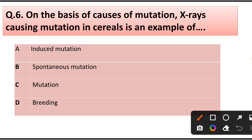Question number 6. On the basis of cause of mutation, X-ray causing mutation in cereals is an example of: induced mutation, spontaneous mutation, or mutation breeding. Answer is option A: Induced mutation.